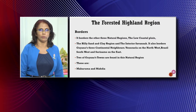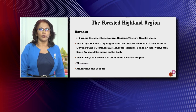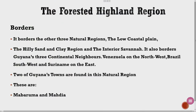The forested highland region borders the other three natural regions: the low coastal plain, the hilly sand and clay region, and the interior savannah. It also borders Guyana's three continental neighbors: Venezuela on the northwest, Brazil to the southwest, and Suriname on the east. Two of Guyana's towns are found in this natural region — these are Maboruma and Madia.